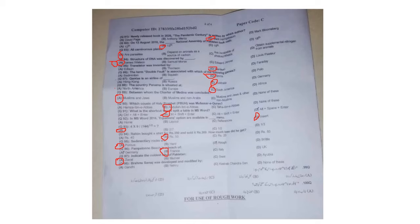Question 98: Brahma Samaj was developed and modified by Keshab Chandra Sen — C is the right answer. Also, 'ushkale chorna' means to cause trouble or create mischief, and 'kafoor' means to disappear or vanish.